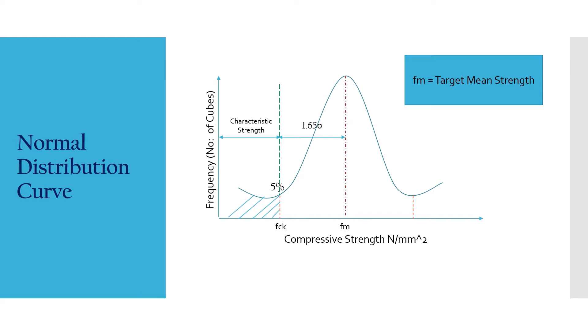So what is this target mean strength? Target mean strength is given by the formula: the characteristic compressive strength plus 1.65 sigma. This means whenever we design a concrete, our target is to make it reach a minimum of FCK value. So to get an FCK value, our target will be Fm. Fm will be our target so that we get a value that is not less than FCK. So Fm is given as the target mean strength.